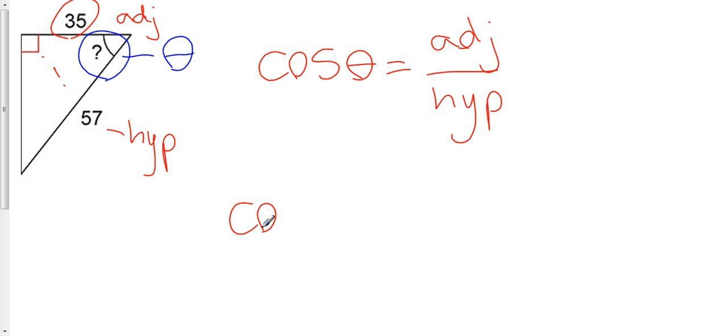So I can say that cos theta is equal to 35 over 57, or that theta is equal to the cos inverse of 35 over 57.